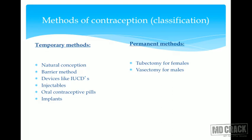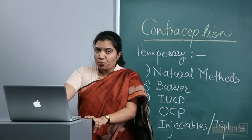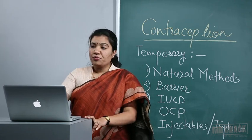In temporary methods, pregnancy is postponed — the patient remains fertile, and births are spaced. Methods include natural, barrier, IUCD, OCI pills, injectables, and implants. Permanent methods involve a surgical procedure that destroys reproductive capacity — tubectomy in females and vasectomy in males.